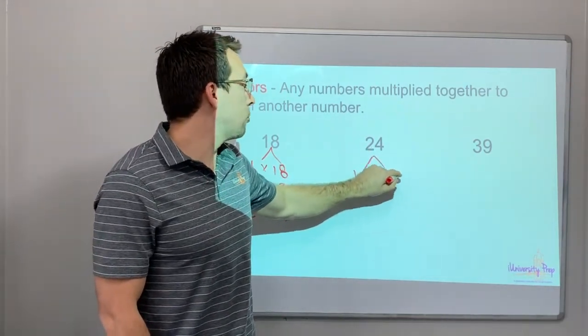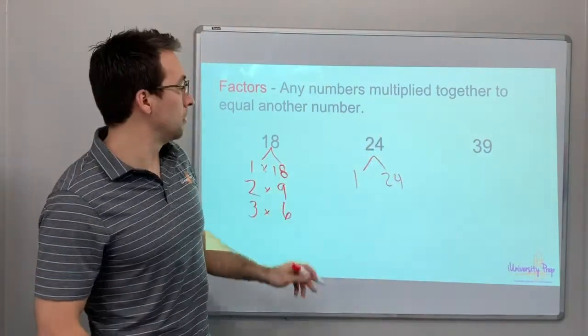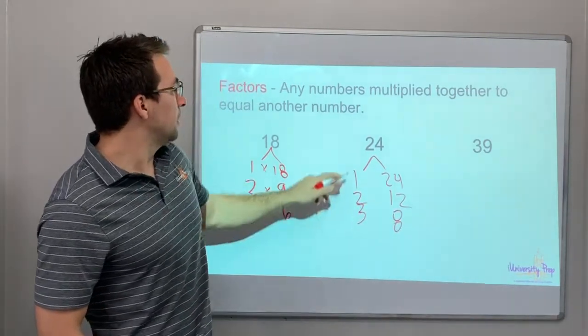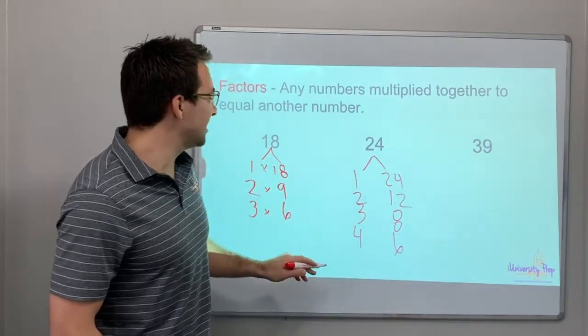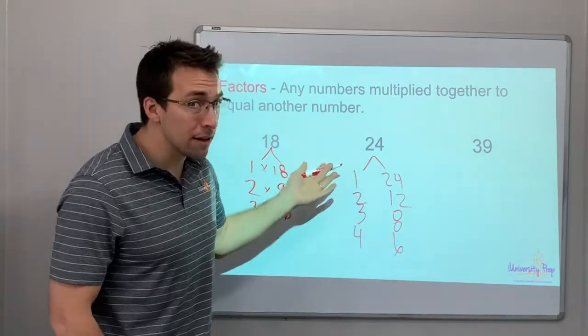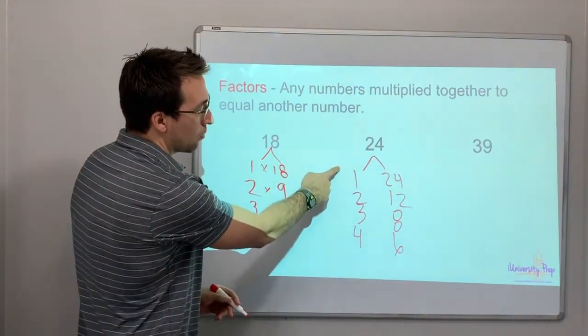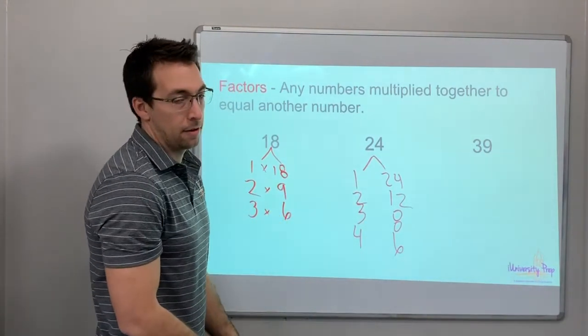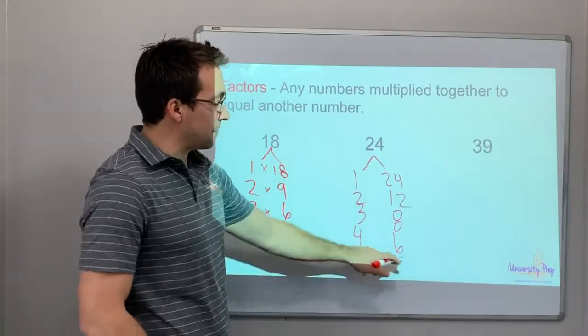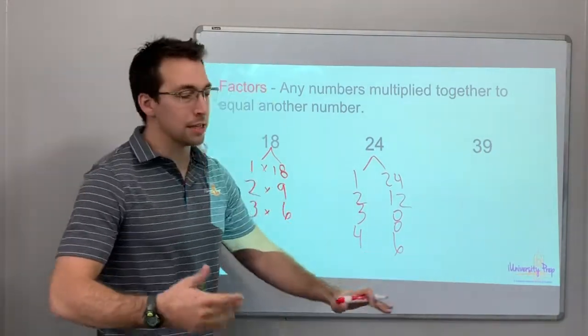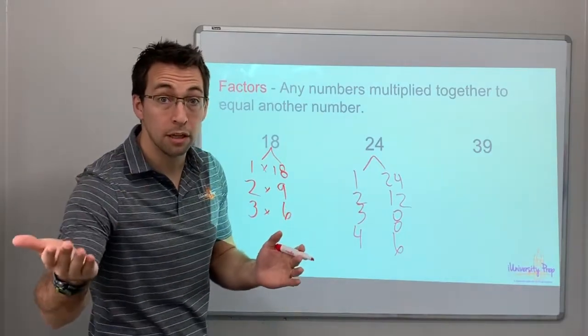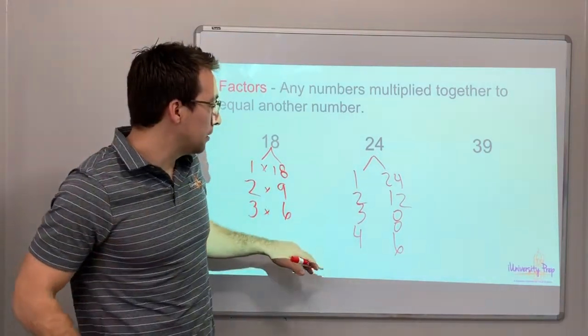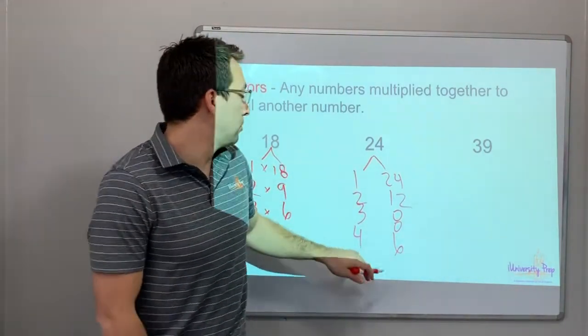1 times 24. Always start with 1 and the number. 2 times 12, 3 times 8, 4 times 6. 5 times, no, 5 times 5 is 25, right? I want to show you two patterns. This is getting bigger: 1, 2, 3, 4, and this is getting smaller: 24, 12, 8, 6. So whenever the two numbers, you can see 5 times 5 doesn't work. But if you get to the middle, if you get to like, let's say with the number 9, 3 times 3, that's where your both sides match. That's the last factor.